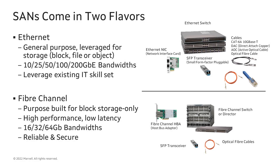When it comes to deploying SAN fabrics, there are two primary protocol transports to choose from: Ethernet and Fibre Channel. Both transports can send SCSI or NVMe storage commands from servers to and from storage arrays over a SAN fabric. Ethernet SANs leverage the same networking gear that server-to-server networks use, with iSCSI today and NVMe over TCP coming very soon as the storage protocols used in Ethernet SANs.